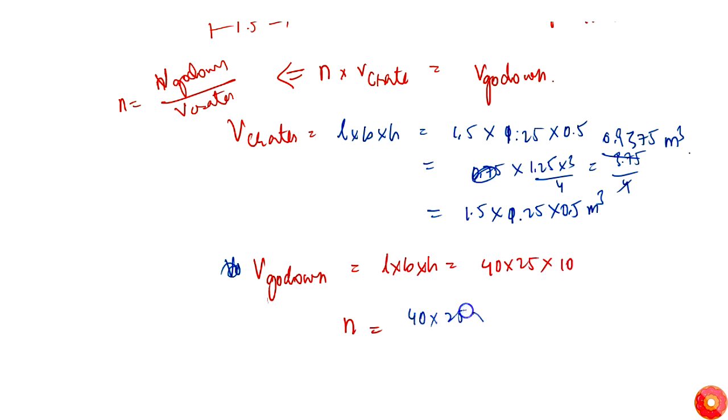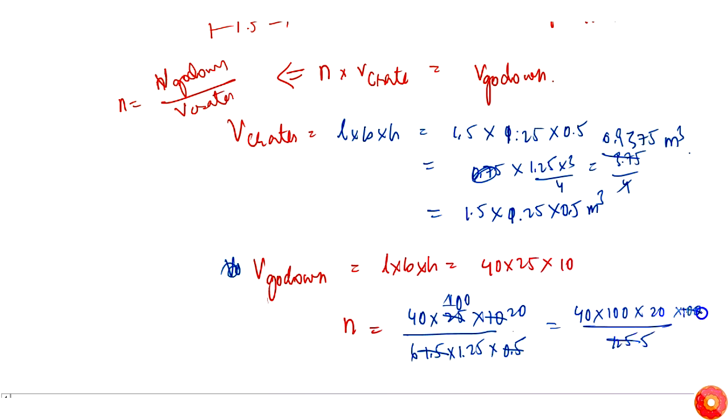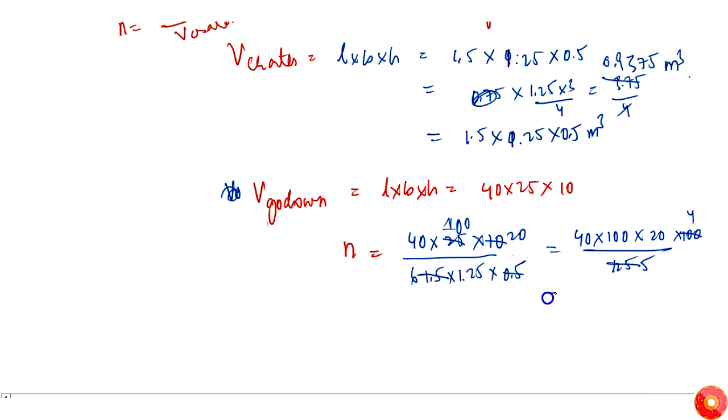From that, n will become equal to volume of go-down, which is simply 40 into 25 into 10, by volume of crate, which is 1.5 into 1.25 into 0.5. So 0.5 into this will become 20 times. This is 25 into - 0.25 into this is 6 times. So this will be simply 40 into 100 into 20 by - this will become 125 by 100. So I can write it like this: 5 into 16 into 4.